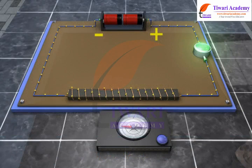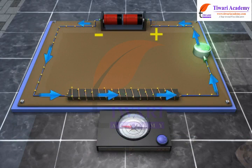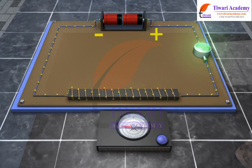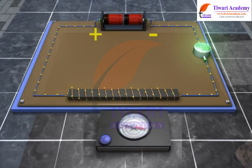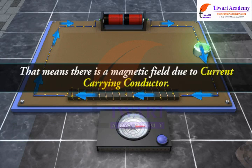He observed when a current-carrying conductor is placed near a magnetic needle, the needle deflects to a certain direction. He also observed that when the direction of current in the conductor is reversed, the needle deflects in the opposite direction. That means there is a magnetic field due to the current-carrying conductor.